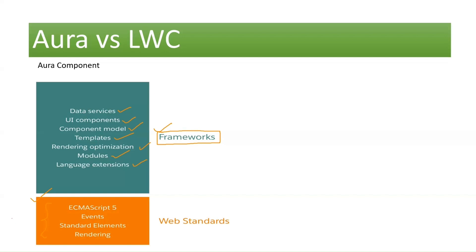Another drawback is that Aura does not follow modern W3C standards. Additionally, rendering was not optimized for continuous UI transformations in Aura. If you are familiar with Aura, you know you cannot have multiple controllers — you have to have one controller with multiple methods exposed as Aura-enabled. These are the key disadvantages of the Aura component.